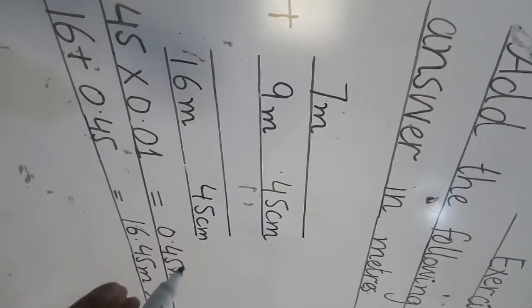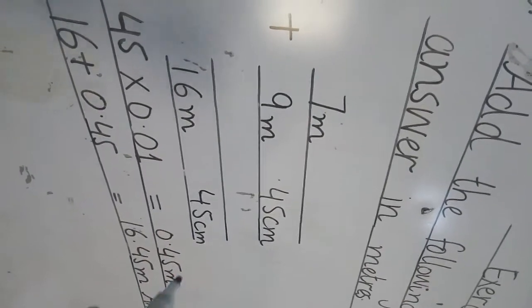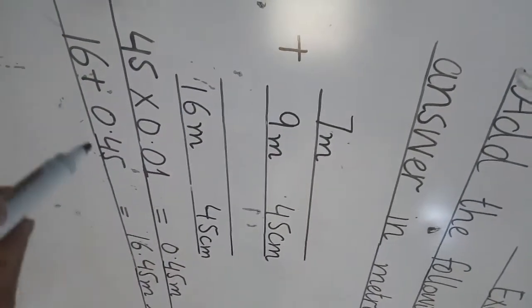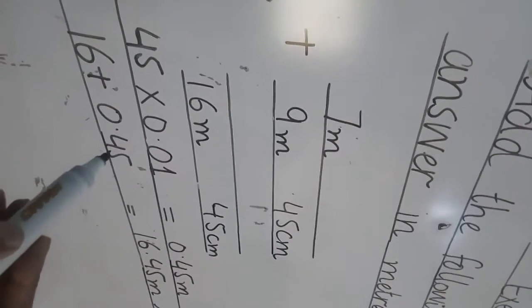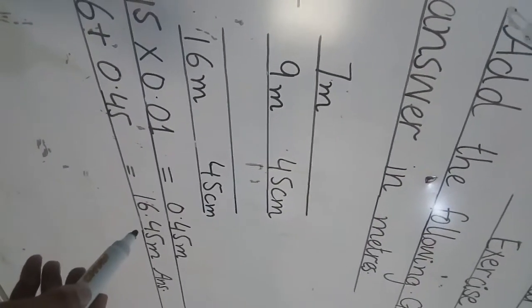So we will change it into meter first. Then this 0.45 meter plus 16 meter. By adding these two values of meter, we get the answer 16.45 meter. Is it clear?